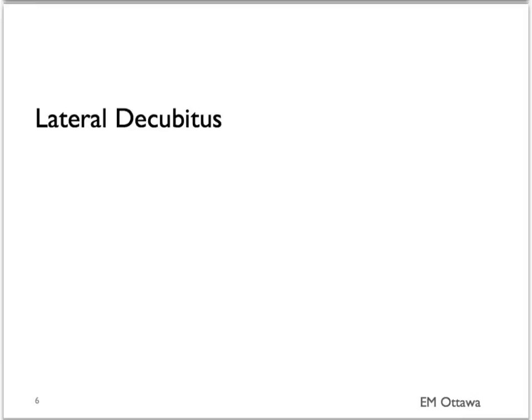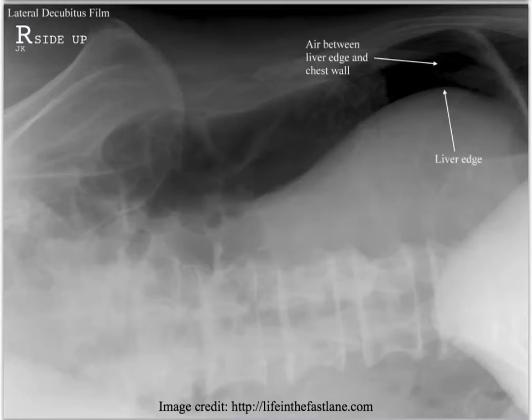What about if the patient is unable to sit up and they can only lie on their side, or in a lateral decubitus position? In this case, the free air does not rise up to the diaphragm. It will rise up towards the top part of the body, on the side. On an x-ray, the free air will be between the liver edge and the chest wall if the patient is lying on their left side.